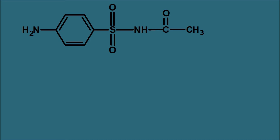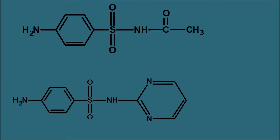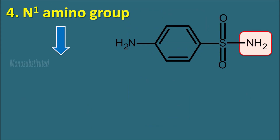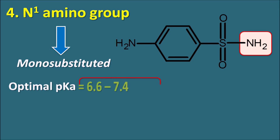For example, sulfacetamide has an acetyl group on the N1 nitrogen, while sulfadiazine has a pyrimidine nucleus on the N1 nitrogen. Both have substitution on the nitrogen of the sulfonamide, but sulfacetamide has an acetyl group and sulfadiazine has a pyrimidine ring. Introduction of heterocyclic rings increases the potency of the drug, which is why most sulfonamides have a heterocyclic ring attached to the N1 nitrogen. The N1 amino group should be monosubstituted, and the pKa must be maintained at an optimal level.